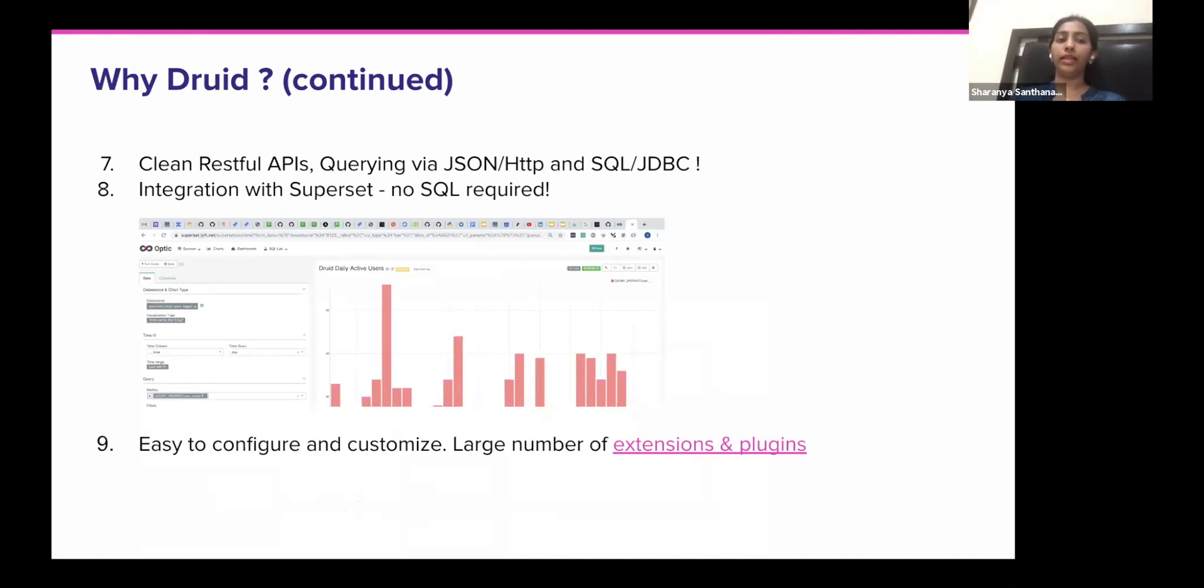Druid also supports these really clean RESTful APIs. So it's really easy for clients to quickly submit. You can even just submit all of your requests via curl and be done. And it was really easy to integrate with Lyft's rest of our client ecosystem.